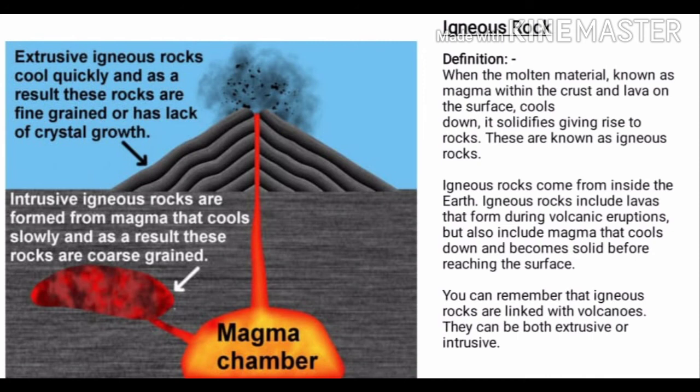Igneous rocks have two main types: extrusive igneous rocks and intrusive igneous rocks. Extrusive igneous rocks cool quickly and as a result are fine-grained or lack crystal growth. Intrusive igneous rocks are formed from magma that cools slowly and as a result are coarse-grained. Igneous rocks are linked with volcanoes and can be both extrusive or intrusive.